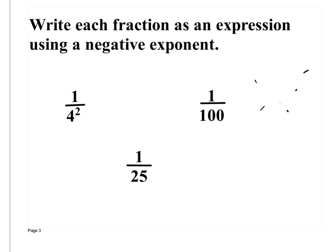Let's work the first one: 1 over 4 squared. How would I write that using a negative exponent? 4 raised to the negative 2 power. I just flip it up — I put it on top, and now it has a negative exponent.